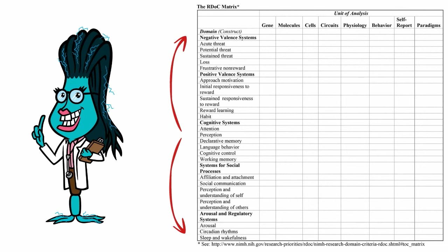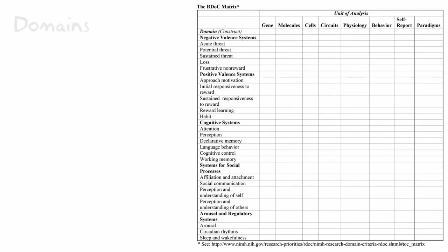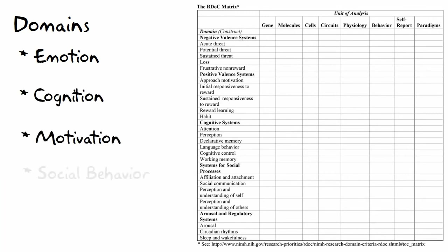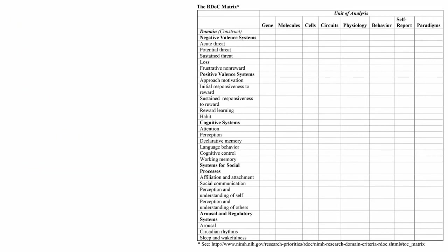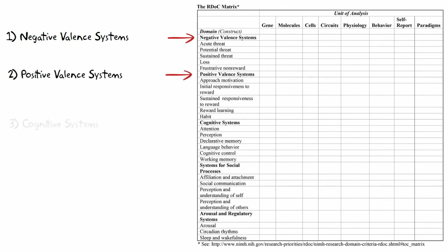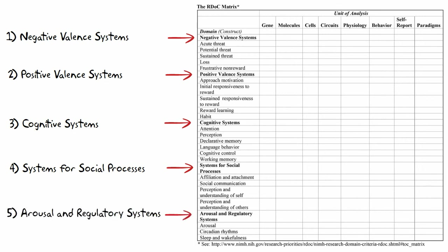Now let's look harder at the other side of the graph and the brain function characteristics being mentioned. NIMH describes the rows as specific functional constructs representing a specific functional dimension of behavior. Those constructs are grouped into domains based upon the current understanding of emotion, cognition, motivation, and social behavior. There are currently five domains in the RDoC matrix: negative valence systems, positive valence systems, cognitive systems, systems for social processes, and the arousal and regulatory system.